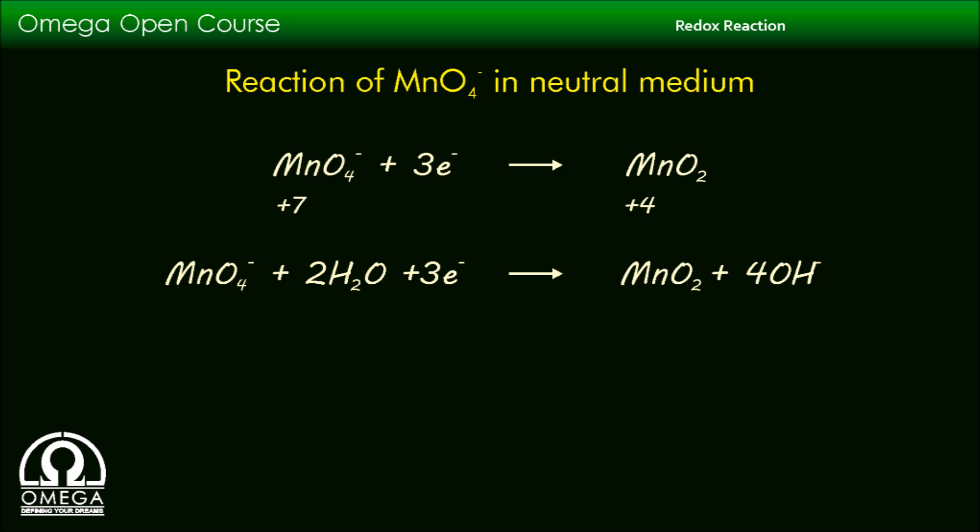The only point to keep in mind in this discussion is that permanganate ion always converts into MnO2 in neutral medium and 3 electrons are absorbed.